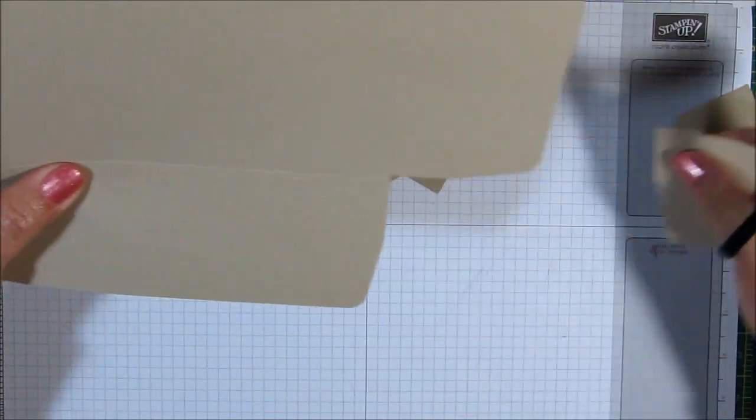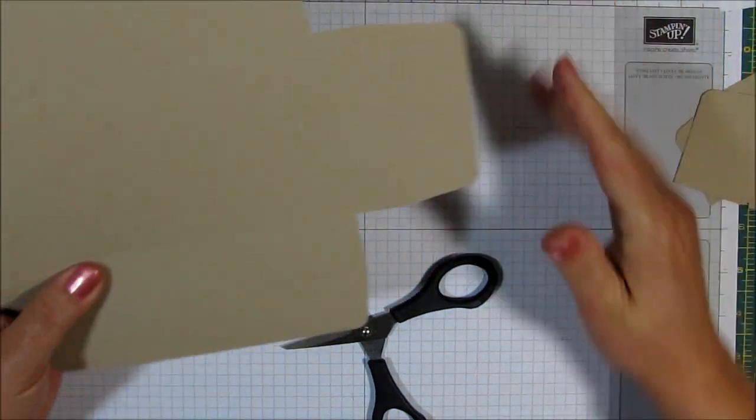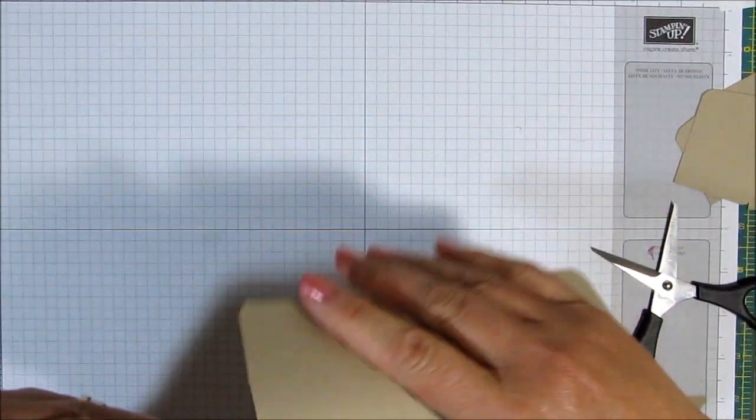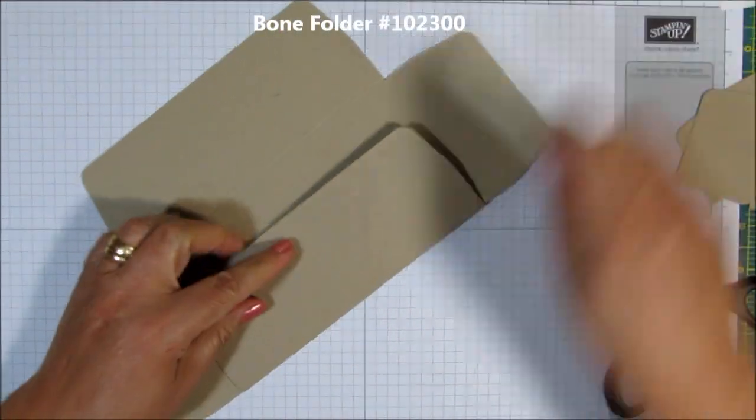And I'm going to take my paper snips and I'm not going to be burnishing and folding just yet, because I'm going to be cutting off all of these squares right at that score line here. And you do not want to throw these squares away because you're going to be using those. And you will be using those later so don't throw them out. Alright, now we can fold and burnish our score lines. And I'm going to use my bone folder for that.